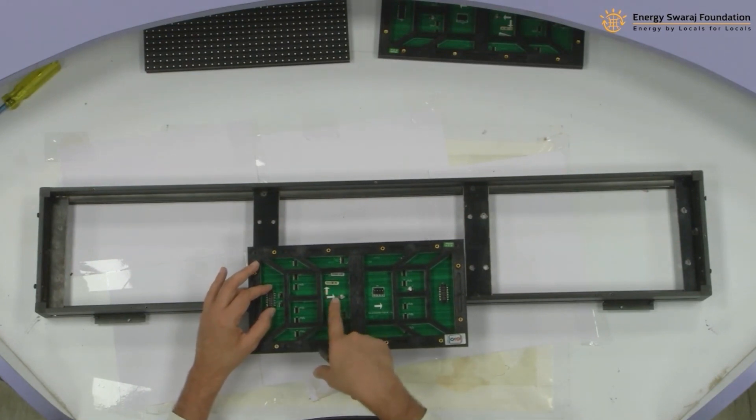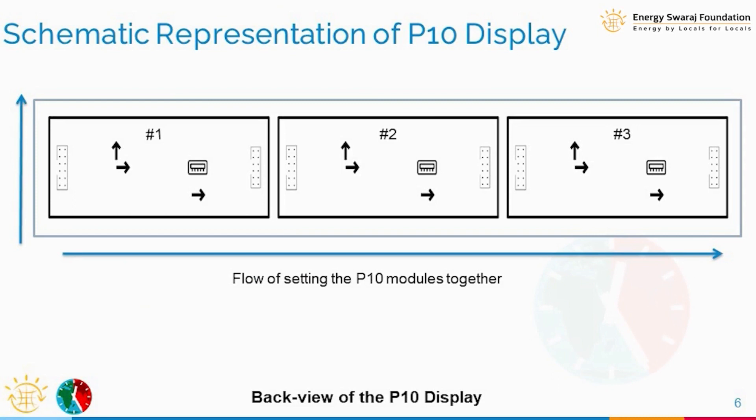These are the three things that we have to see, and this is how the back side of all those put together will look like. You can see on the screen, all the arrows should be pointing in the same direction - very, very important.